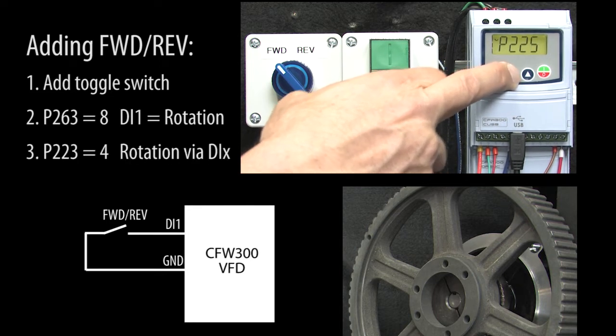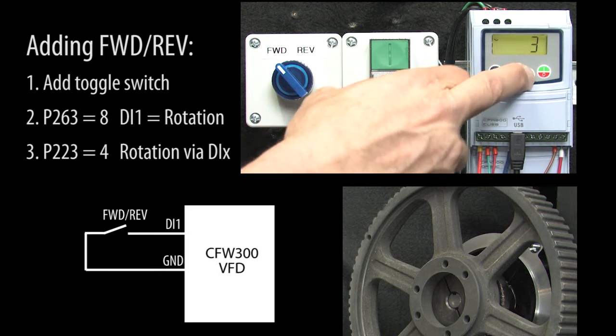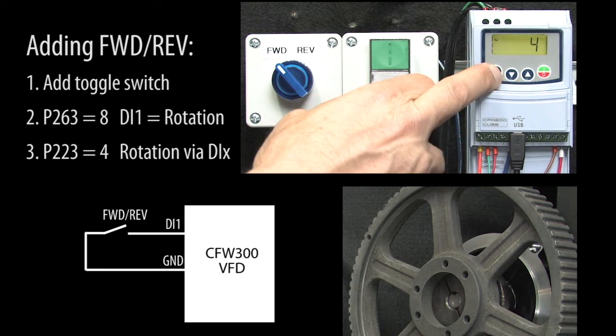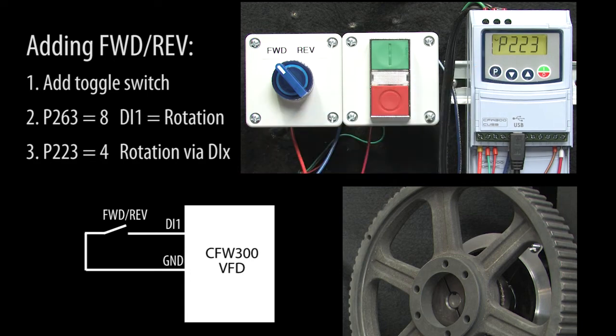Finally, go to parameter 223 and set it to a 4. That tells the drive that the rotation direction will be controlled by a digital input.